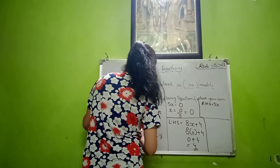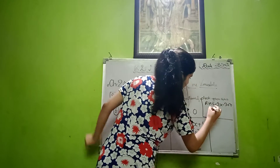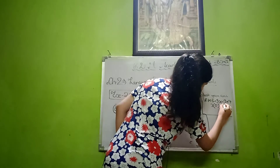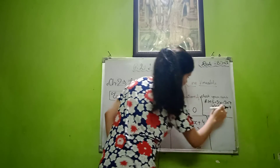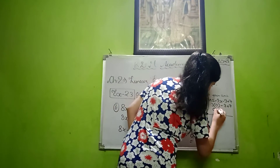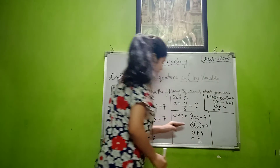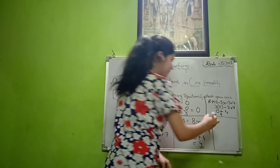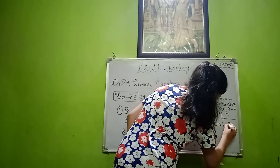For RHS: 3x minus 3 plus 7. So, substituting x equals 0: 3 times 0 minus 3 plus 7, which is 0 minus 3 plus 7, equals 4. Now here LHS value is 4 and RHS value is 4, that means LHS equals RHS.